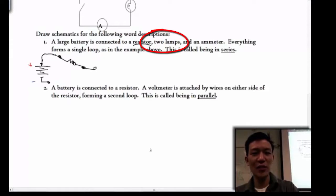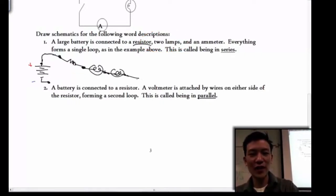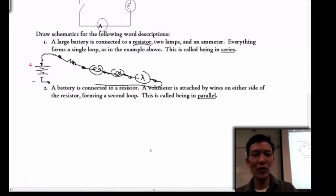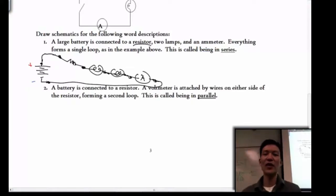And then it's connected to two light bulbs, so there's one light bulb. I'm putting a little dot to show that these are different circuit elements. There's my second light bulb. And then it's connected to an ammeter, which is just connected in series. And then everything forms a single loop, so we have to connect it back to the bottom so that we get the circuit to flow there.